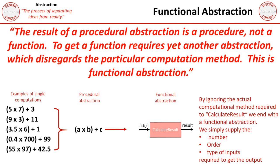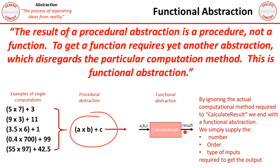So if we go back to our earlier example, here are our variations of a computation. We've removed the actual values and we've got procedural abstraction. Well here now is functional abstraction — we're now ignoring the actual computational method, that's this bit here, that is involved in calculating our result. All we simply care about is the number, order and types of inputs required to get the output. This in essence becomes a black box, and this is how we end up with functional abstraction.